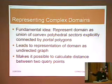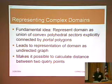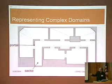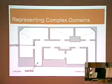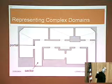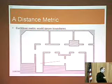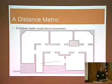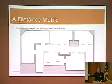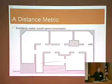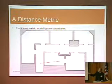Based on this assumption, we can represent these complex domains as undirected graphs, which makes it possible to calculate the distance between two query points. Here you see these convex cells separated by dotted lines, and the portal polygons that separate these individual sectors. If we would take the Euclidean metric as in the example for Great Dark Island, we would completely ignore the walls and the boundaries — we would interpolate across the walls. It is more appropriate to take these doors and portals into account.